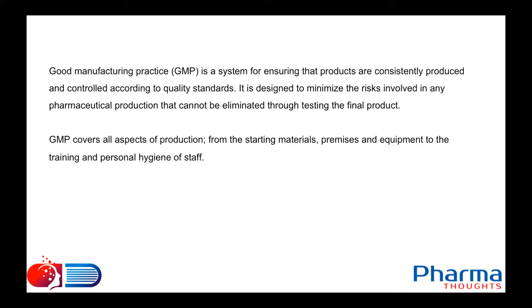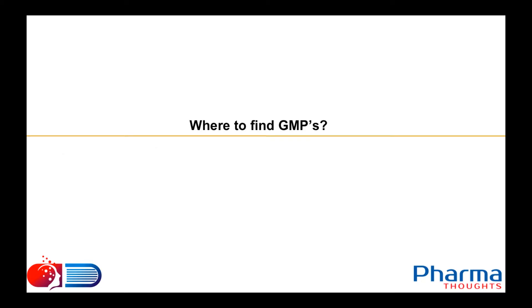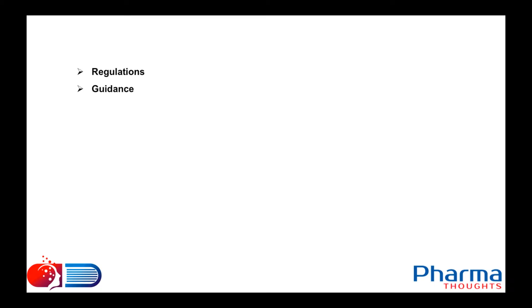GMP covers all aspects of production — from the receipt of raw materials through manufacturing, premises, equipment, training of personnel, and personal hygiene — everything from receiving raw materials to dispatch of the final product. Now, where can you read about GMPs? Normally GMPs are obtained from regulations and guidances, but first let us see what the differences are between a regulation and a guidance.